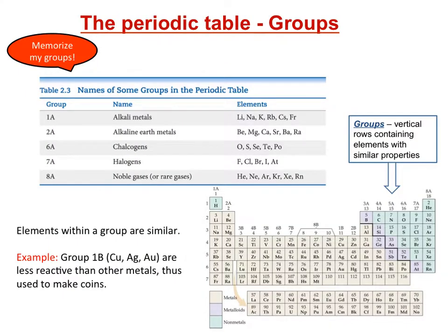Each of these groups have names. The most important groups you need to know are group 1a, 2a, 6a, 7a, and 8a. These are common names for each of these group numbers.